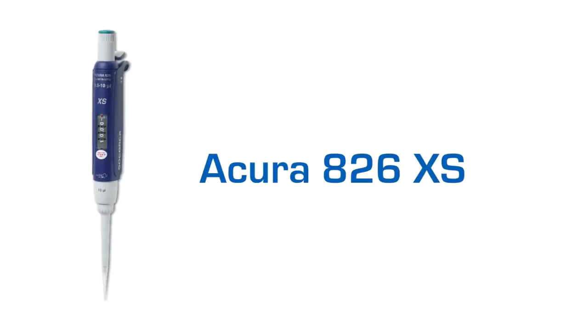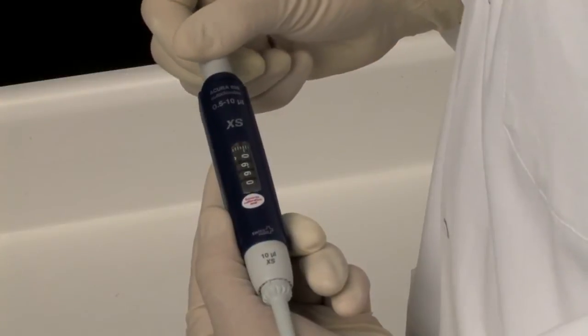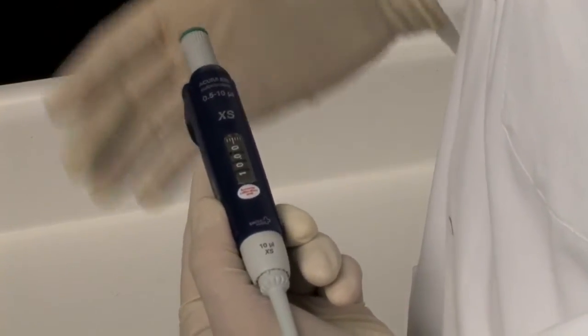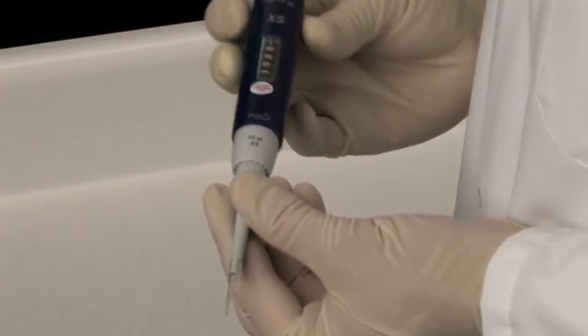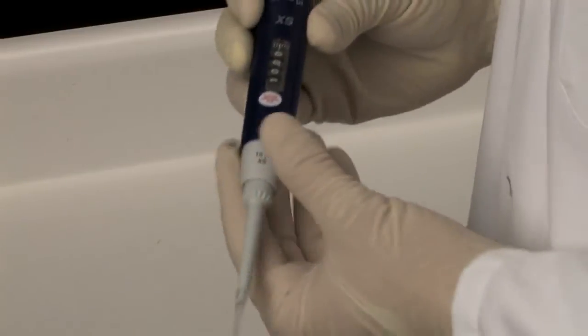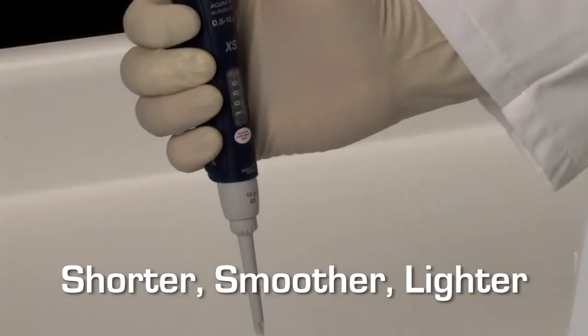The new Acura 826XS is specifically designed for research applications to make working with critical samples trouble-free and more precise. While providing all of the standard features of the Acura Manual line of pipettes, including precise setting and checking volumes, as well as user-friendly tip adjustment to accommodate a variety of tips, the 826XS is shorter, smoother, and lighter.